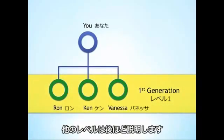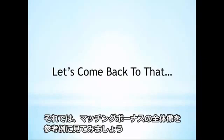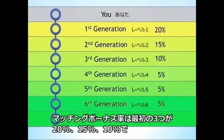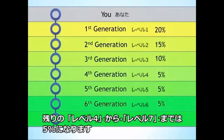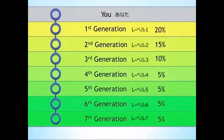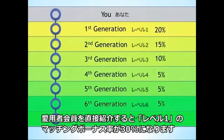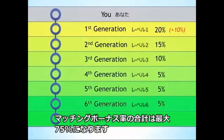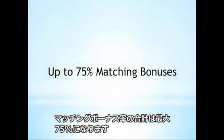More on generations in a minute. Let's look at the whole matching bonus structure. Jeunesse pays matching bonuses on seven generations. The payout is 20%, 15%, 10%, and 5% on generations four through seven. There's even an option to increase your first generation up to 30% by acquiring preferred customers. In total, the Jeunesse Rewards Plan offers up to 75% matching bonuses.